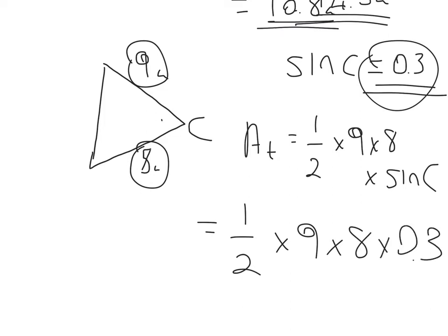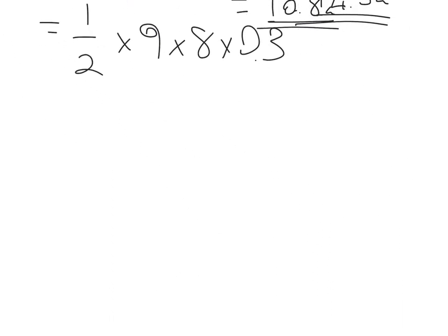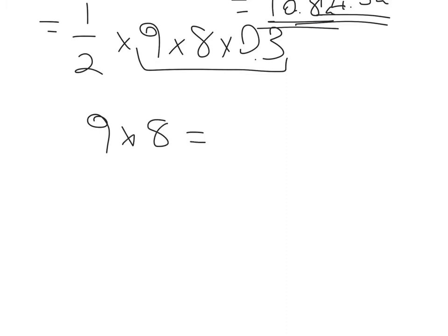Now we need to think about doing this without a calculator. So let's just take our time with it. So I'm going to first work this out and then half my answer. So 9 times 8 times 0.3, well 9 times 8 first of all is 72.